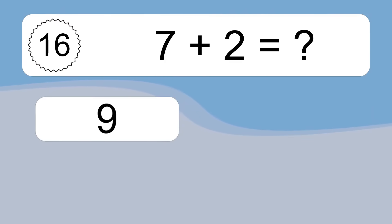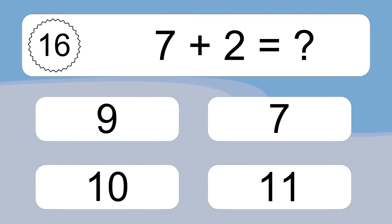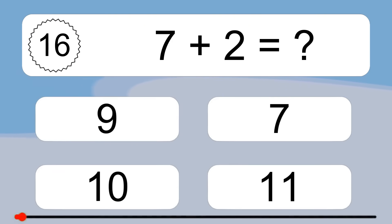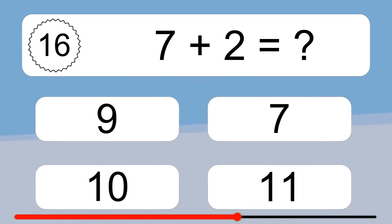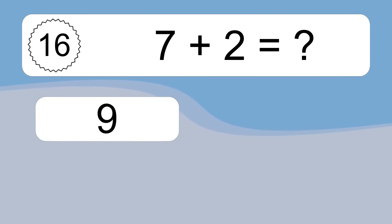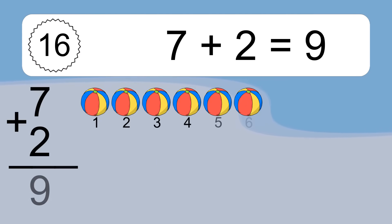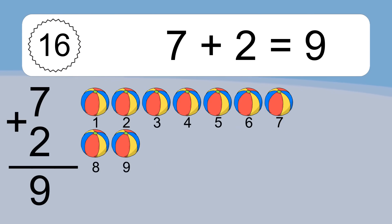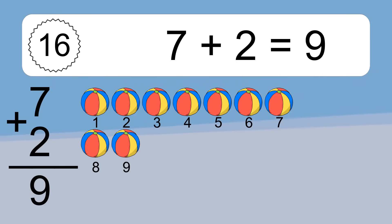7 plus 2 equals what? 7 plus 2 equals 9. Let's count it: 1, 2, 3, 4, 5, 6, 7, 8, 9.